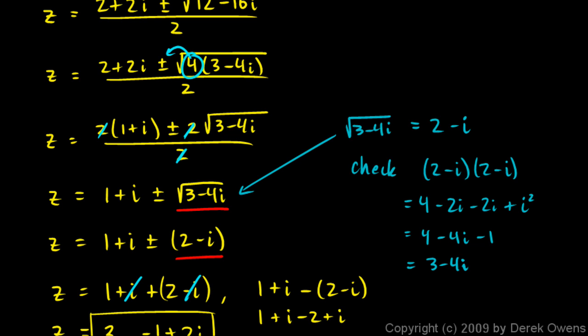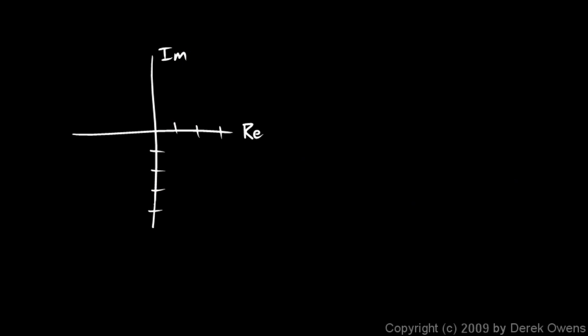The square root of 3 minus 4i. So let's think about this number. 3 minus 4i, well, that's 3 on the real axis and negative 4 on the imaginary axis. So 3 minus 4i is this point right here in the complex plane.